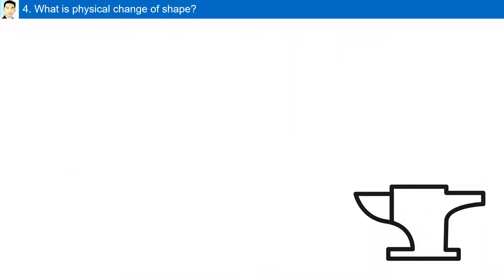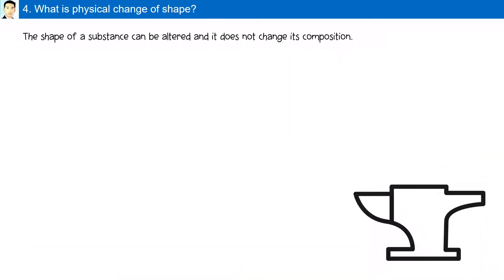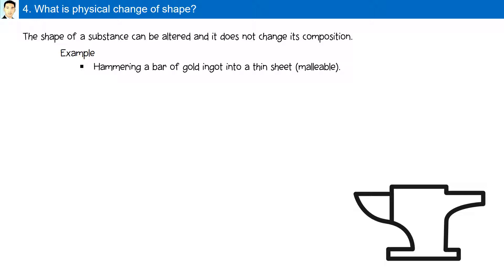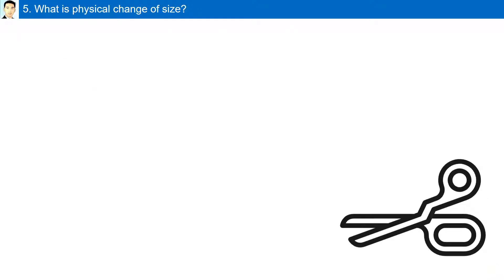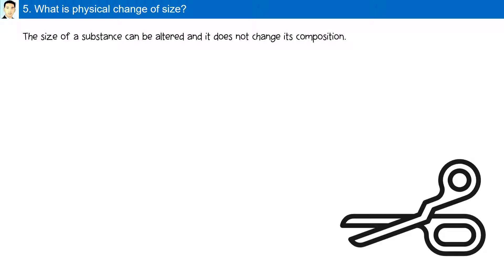What is a physical change of shape? The shape of a substance can be altered and it does not change its composition. For example, hammering a bar of gold ingot into a thin sheet, or drawing copper into a thin wire. What is a physical change of size? The size of a substance can be altered and it does not change its composition. For example, cutting paper into strips or grinding crystals into a powder.